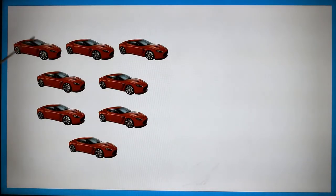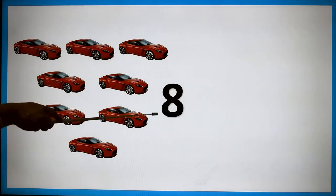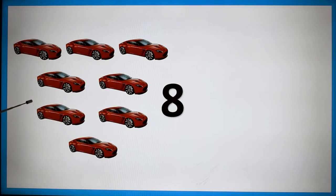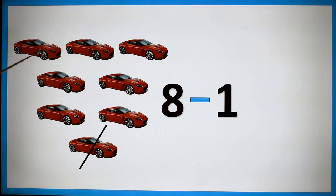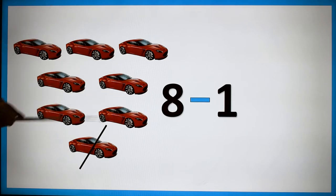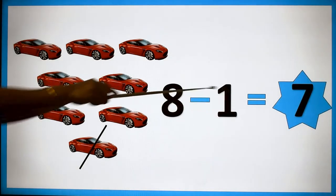How many cars are there? 1, 2, 3, 4, 5, 6, 7, 8 — eight cars. Eight minus one. Now I am cancelling one car from this. How many cars are left over? 1, 2, 3, 4, 5, 6, 7 — seven cars. So eight minus one is equal to seven.